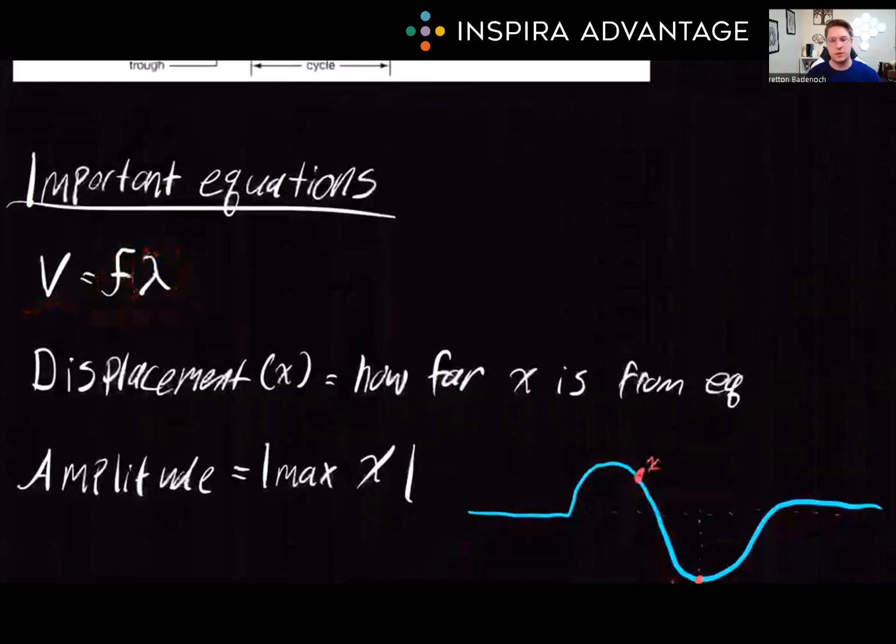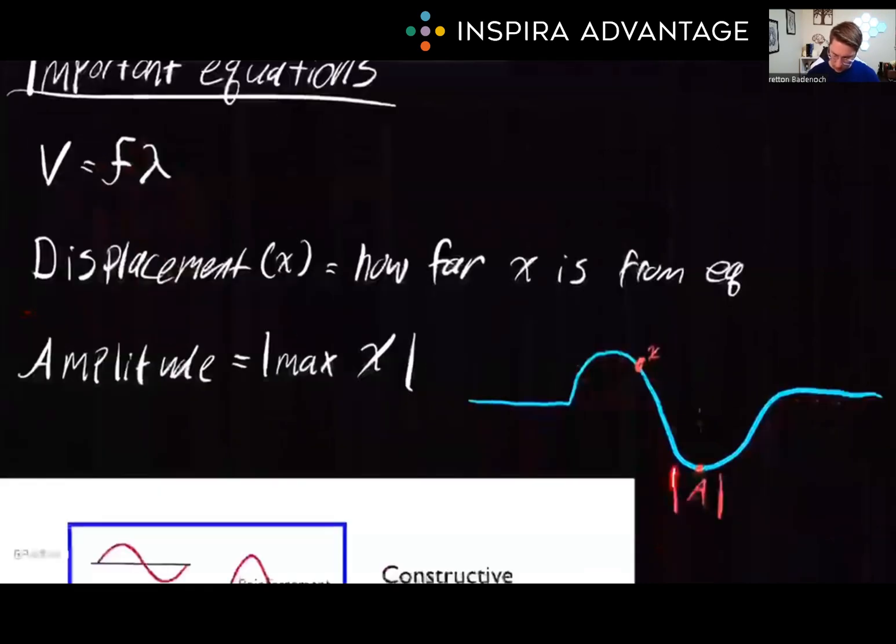Another key term to know is displacement. Displacement refers to how far a point on the wave is from the equilibrium position, while amplitude is the magnitude of its maximal displacement. Picture a calm sea. The displacement would be the height of the wave above the calm water, and the amplitude would be the height from the calm water to the crest of the wave. Displacement can be anywhere on the wave, but amplitude will always be the same value, and it's always going to be an absolute value. So A is just going to be equal to negative A, so on and so forth.